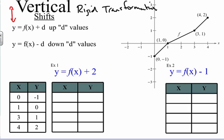When you have y equals f of x plus d, the d means you are adding d units to f of x, changing the y values by d and moving the values up. When you have f of x minus d, you are taking all the f of x values — the y's — and subtracting d units, so you're moving them down d values.